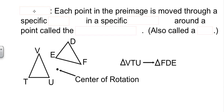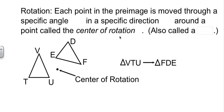Our third one is a rotation. A rotation is similar to a translation, but instead of moving a specific distance, we're moving through a specific angle in a given direction. And instead of having an arrow to work from, we have a point called the center of rotation.